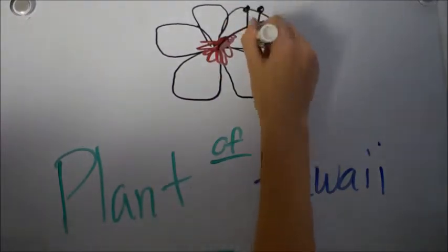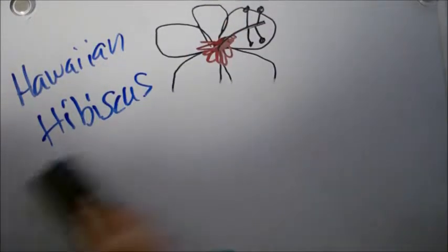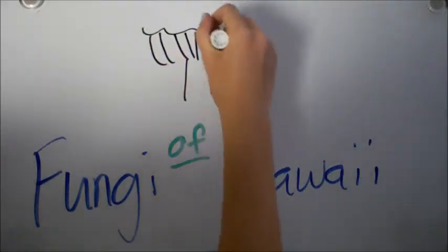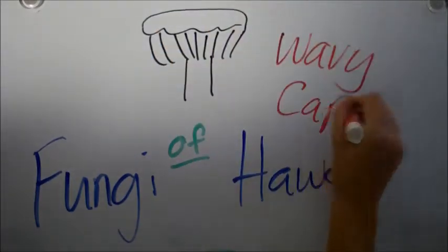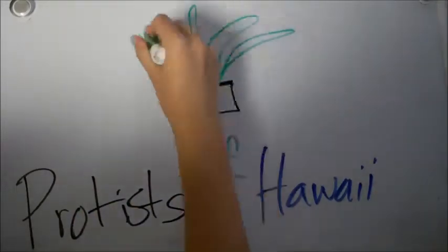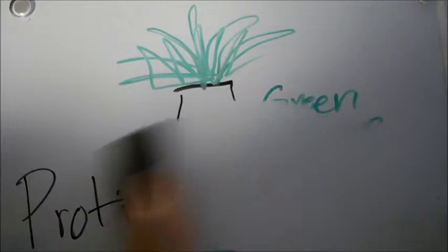In the plants of Hawaii is the Hawaiian hibiscus, the state flower, which I found out only lasts for a day. Like, wow. The fungi of Hawaii would be the wavy cap. And they live on wood chips, which is really weird. And the protists of Hawaii is the green algae, where you can find deep in the ocean.